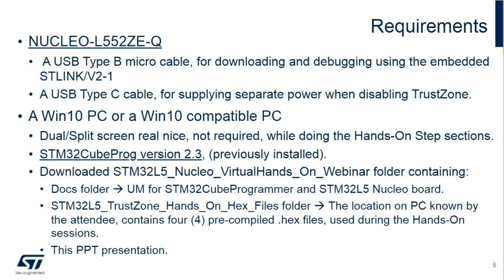What do you need to perform the next four hands-ons? You need the nucleo board, which you should have received along with the type-B cable and the type-C cable. All 100 boards sent to DigiKey have been given out, so that's good news. The CubeProgrammer runs under Windows 10, so you should have CubeProgrammer version 2.3 already installed. In the download file there are subfolders: a doc folder with the user manual for CubeProgrammer and the nucleo board, a subfolder for the hex files we'll use for the hands-on, and of course this PPT presentation.